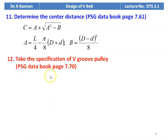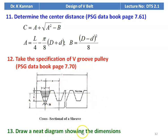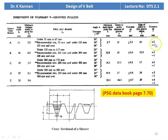Then take the specification of the V-groove pulley from page number 7.70 of the PSG data book. The cross section of the V-groove pulley shows specifications including pitch diameter, B value, H value, LP value, F value, C value, L value, and 2-beta. All these details are available in the PSG data book. Draw a neat diagram showing the dimensions and write down all the specifications clearly.